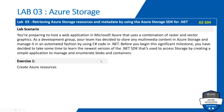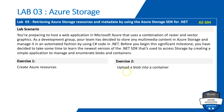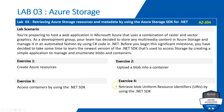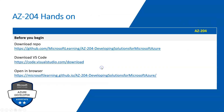We'll divide this entire lab into five exercises. In exercise one, we'll go and create Azure resources. In exercise two, we'll upload a blob into a container. In exercise three, we'll access containers by using the .NET SDK. In exercise four, we'll retrieve blob Uniform Resource Identifiers — basically URIs — by using the .NET SDK. And in the last exercise, we'll clean up the resources.